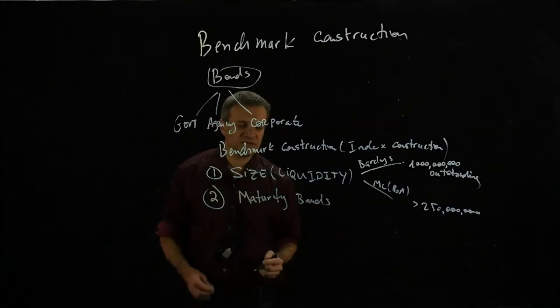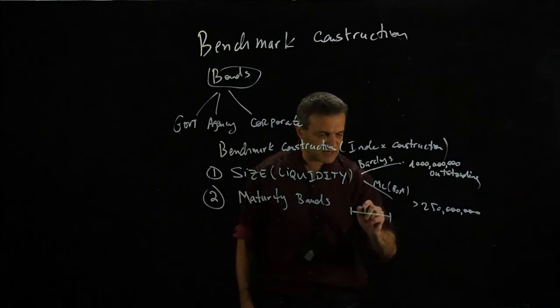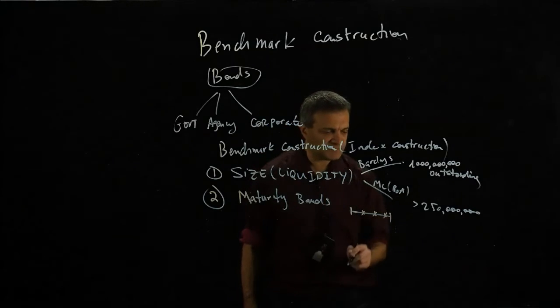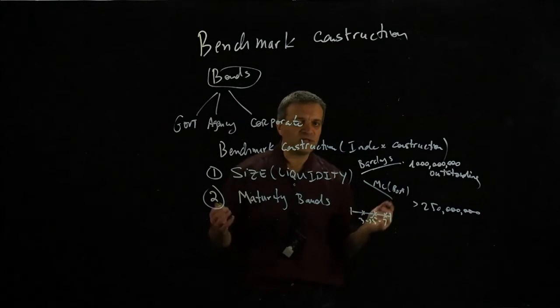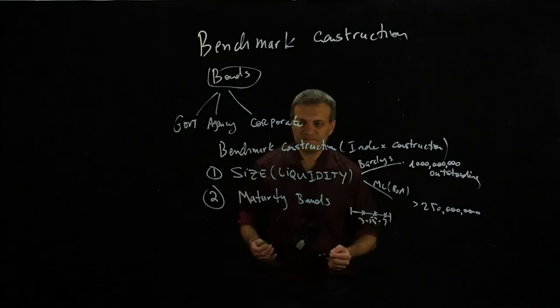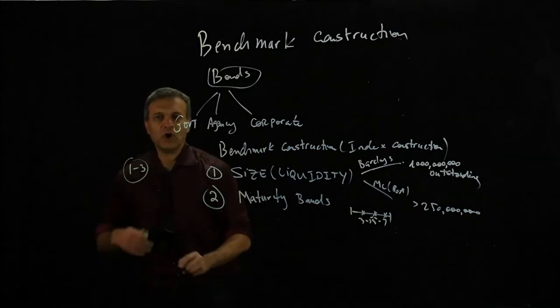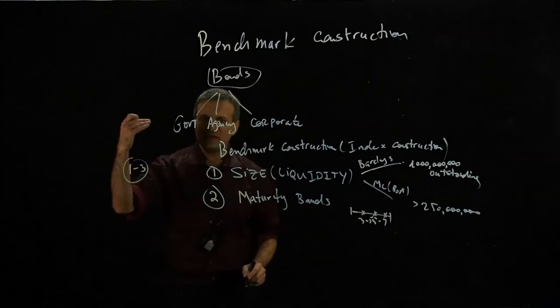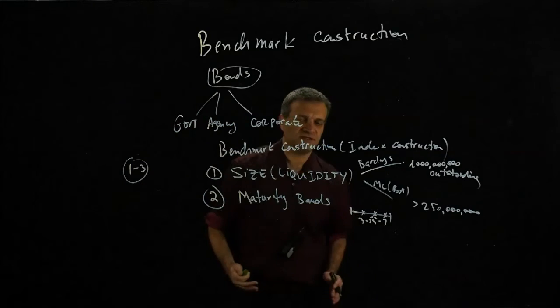The second thing is the maturity bands. So maturity bands is basically, if you have a maturity sector, you divide it into smaller pieces. So, for example, 5 to 7 or 3 to 5 or 1 to 3, or whatever. So if you have an index, for example, let's say the index is Barclays index 1 to 3, all the bonds which mature in the range between 1 to 3 years will go into this index.